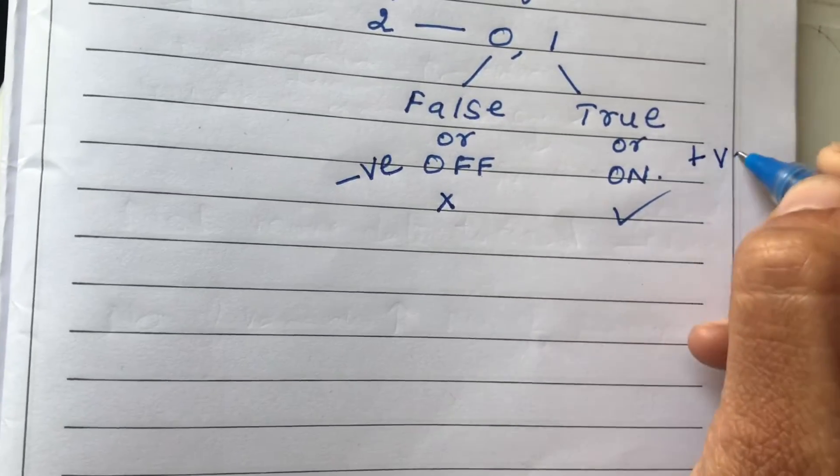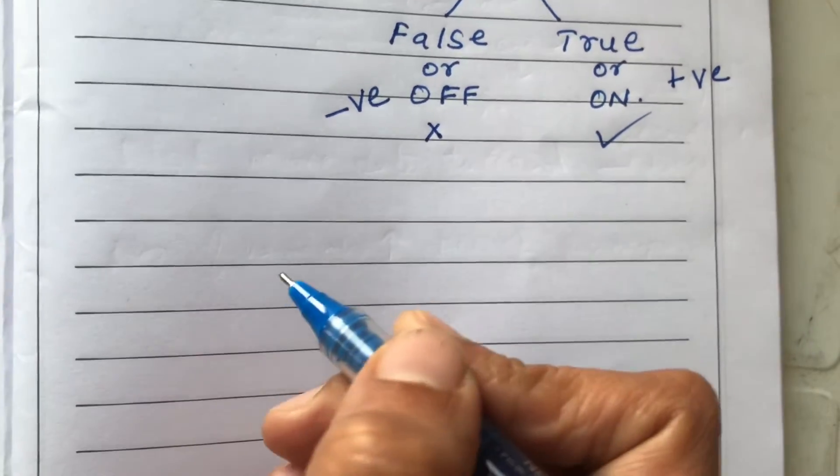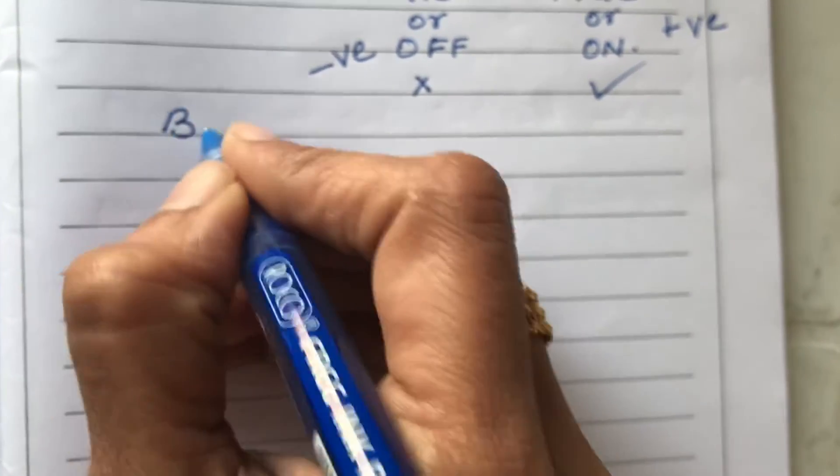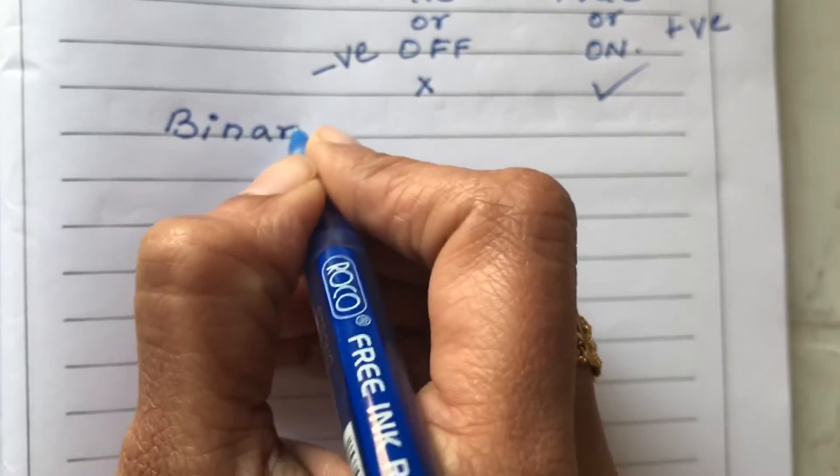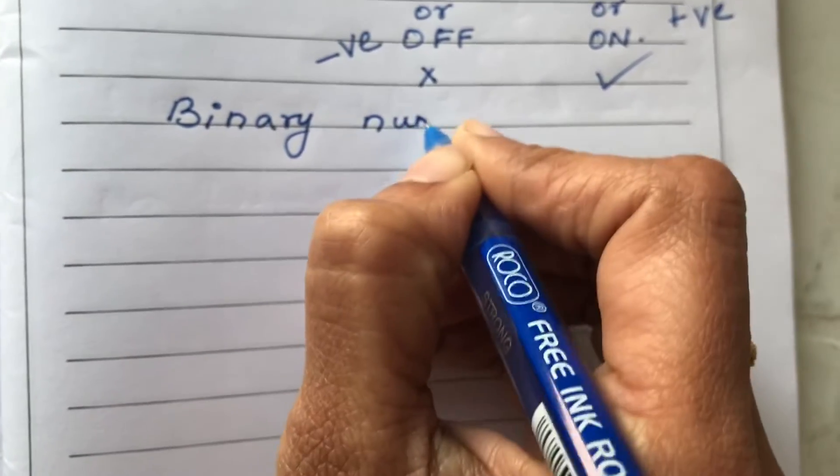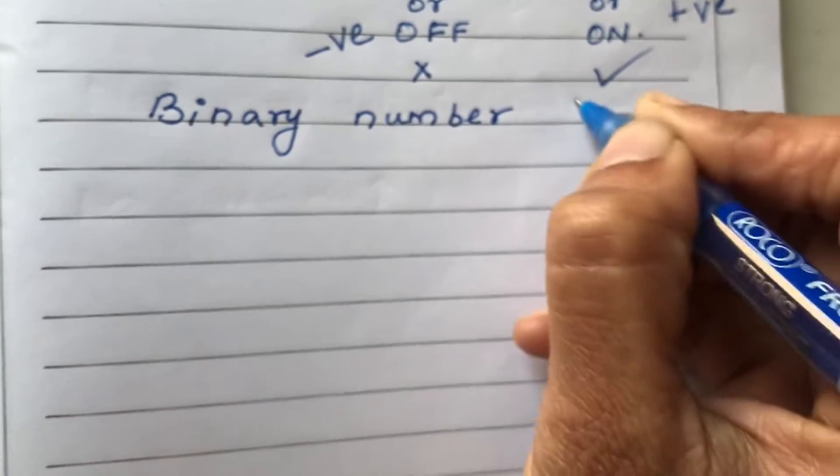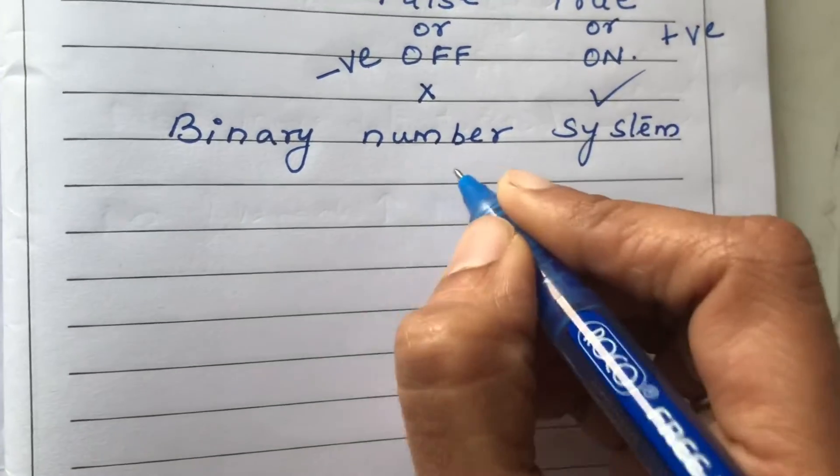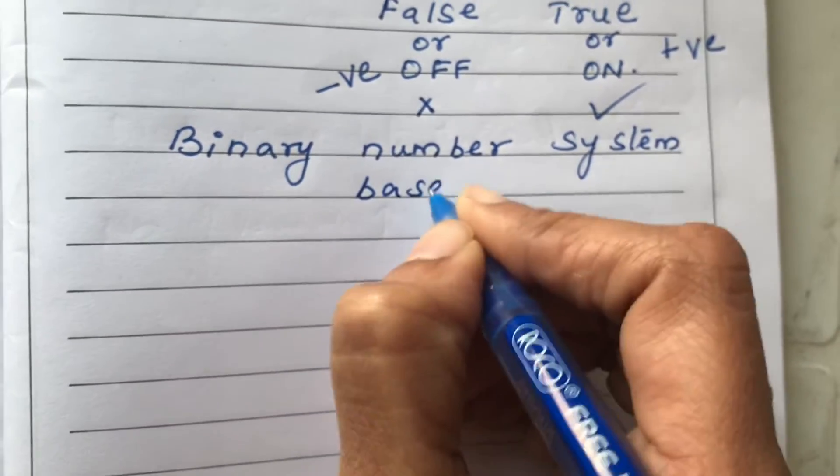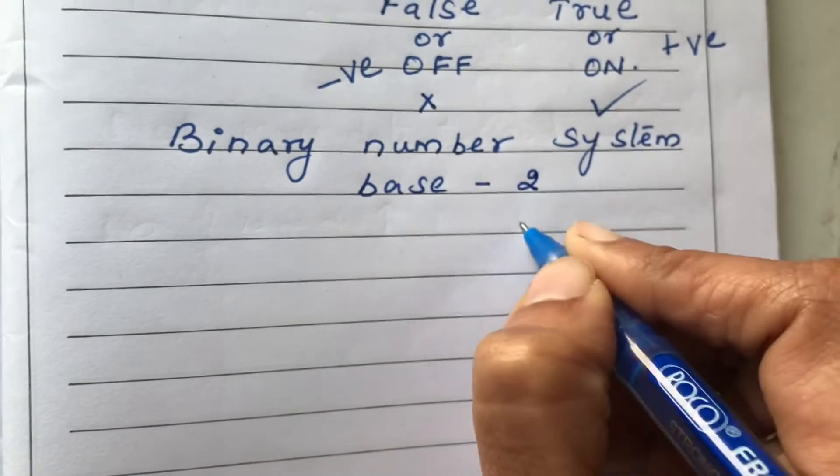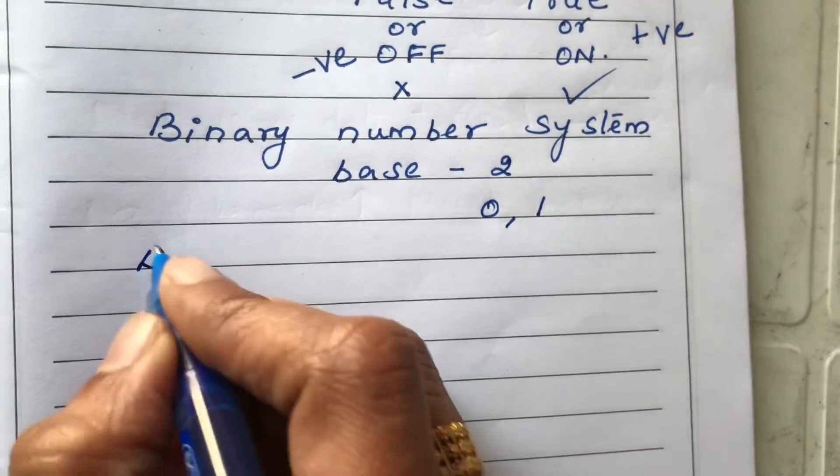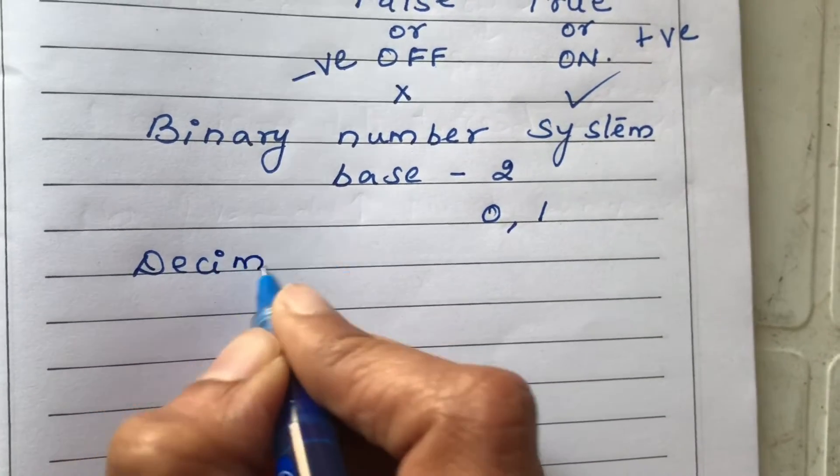This is said to be the binary number system, where you will have the base as 2 and the numbers will be just 0 and 1.